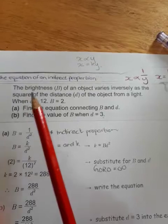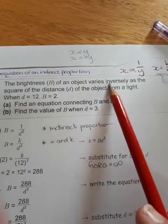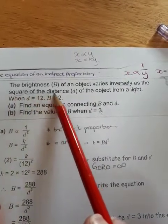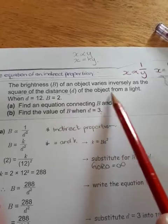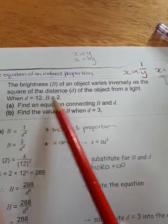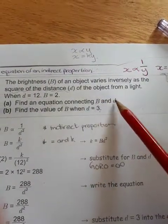If we look at the example, the brightness B of an object varies inversely as the square of the distance d of the object from the light. When d is 12, B is 2. Find the equation that connects B and d.